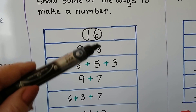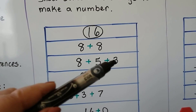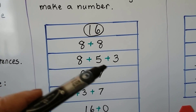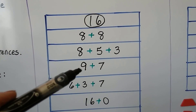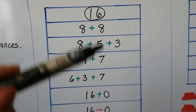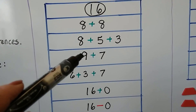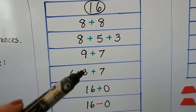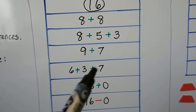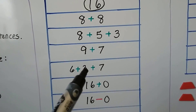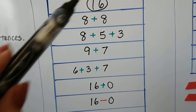We could break the 8 into a 5 and a 3 and do 8 plus 5 plus 3. We could even add 9 plus 7 — that would give us 16. We could also break the 9 into a 3 and a 6, then add the 7 and 3 to get 10 and add 6 more, which gives us 16.